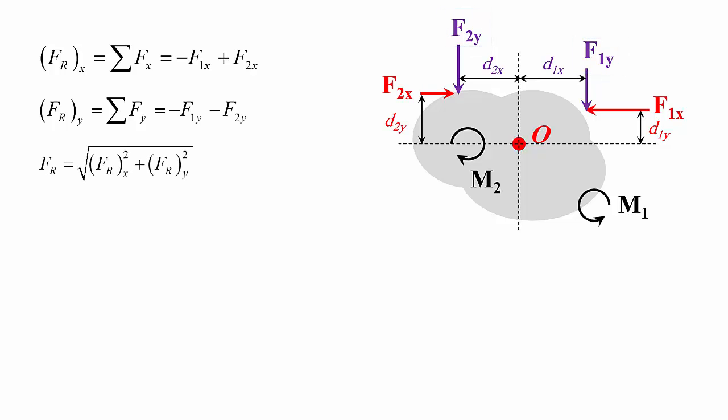Now, to calculate the resultant, the square root of the sum of the squares. And for theta, we take the inverse of the tangent and we take the absolute value of F1Y over F1X in the X direction.